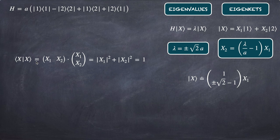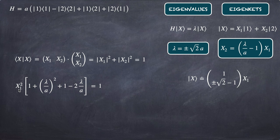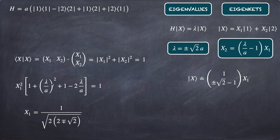Applying normalization: x₁² + x₂² = 1. Substituting x₂ = (λ/a − 1)x₁, we get x₁²[1 + (λ/a − 1)²] = 1. Since λ/a = ±√2, we have (λ/a)² = 2, so the bracket evaluates to 1 + (√2 − 1)² = 4 − 2√2, giving the normalization factor as √(4 ∓ 2√2).